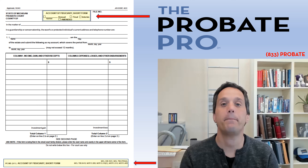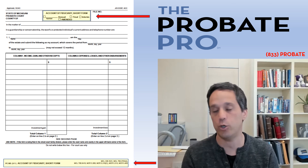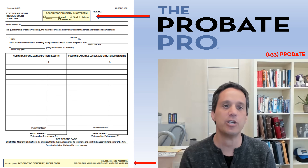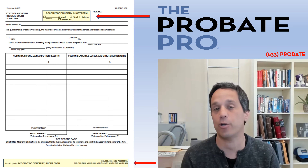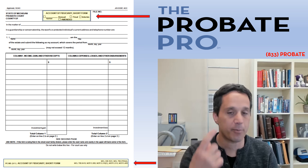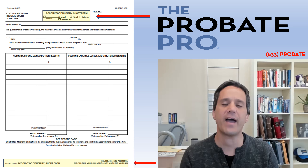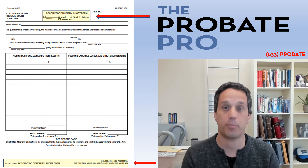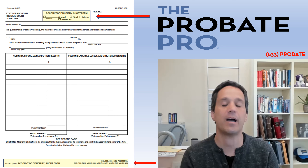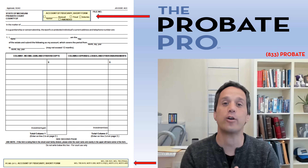The form you have here is form PC 583, a state court administrator approved form that can be used for filing your annual account. There is also a long form account you can use if you choose. At the top, a red arrow identifies whether it's an annual account — you can put the annual account number, for example first, second, or third. If this is the final account, you would check off that box. A final account is used when the individual died, you've been removed as conservator, or the conservatorship has been discharged.